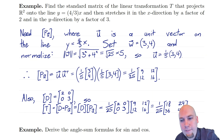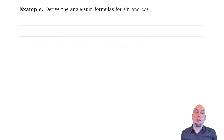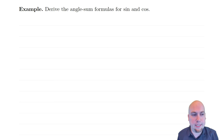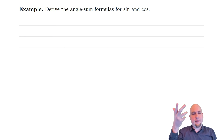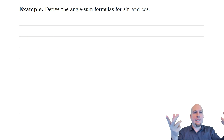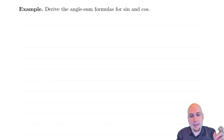As one final example of something neat we can do with these ideas, we're going to derive the angle sum formulas for sine and cosine. You've already learned these formulas at some previous point in your mathematical education — the formulas for things like sine of (θ + φ) or cosine of (θ + φ). We're going to re-derive them and show you where those come from using matrix multiplication and standard matrices.